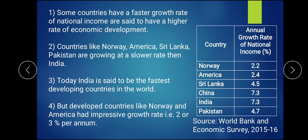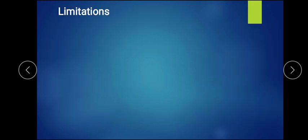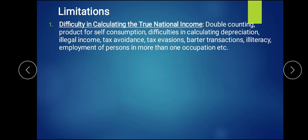This is how we can identify growth rates from survey data — we must use authentic sources. Now let us look at the limitations of growth rate of national income. The first limitation is difficulty in calculating true national income, because of double counting, self-consumption, depreciation, tax avoidance, tax evasion, black money, illiteracy, and barter transactions — all these factors make it very difficult to calculate.